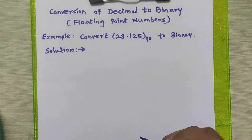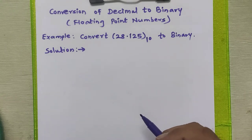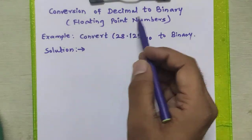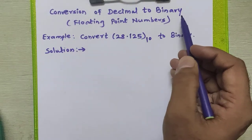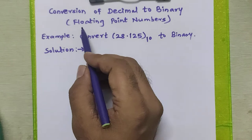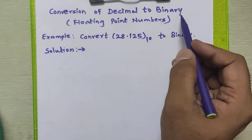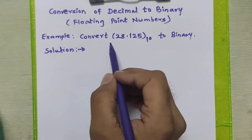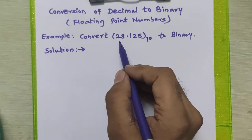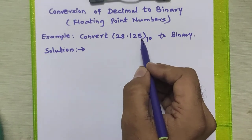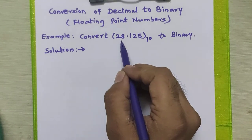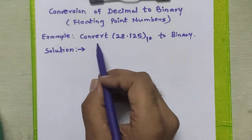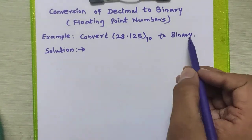Hello friends, in this video we are going to study how to convert a decimal number to binary number, especially how to convert a floating point decimal number to binary number. Consider this example where we have given 28.125 — we have to convert this number to binary.